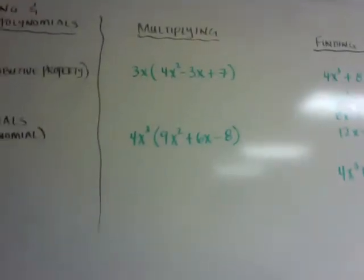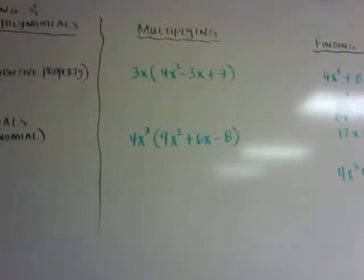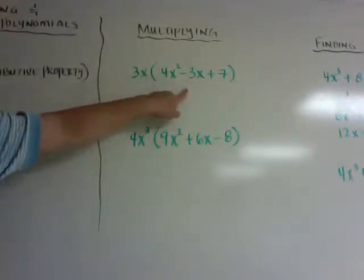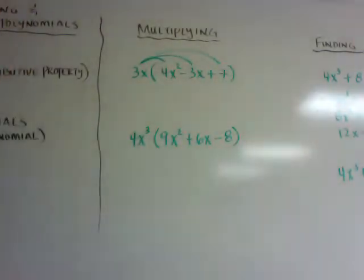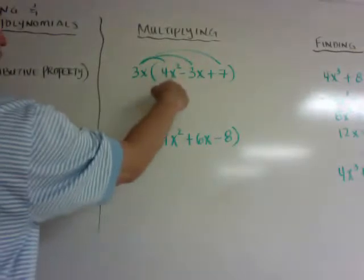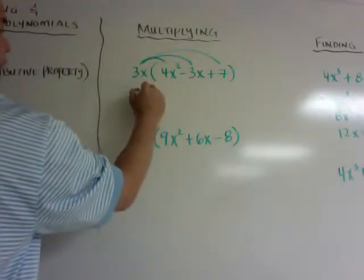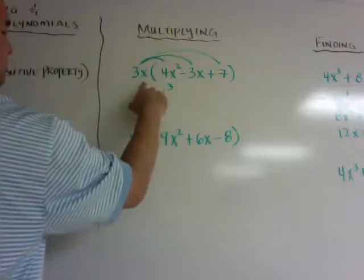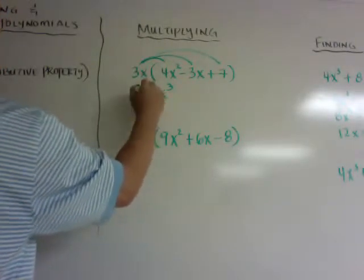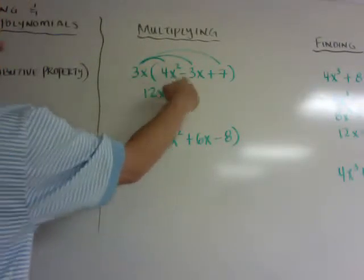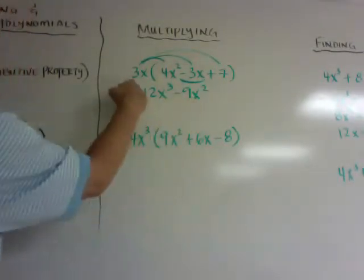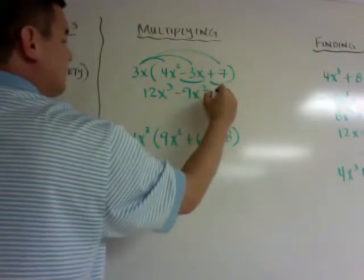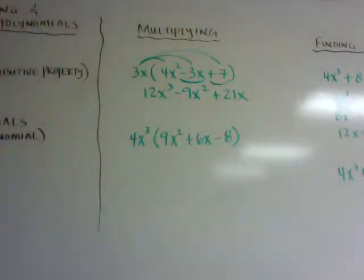So the first one, multiplying, you can see I have a monomial times a trinomial. So all you do is distribute these in. 3x times 4x² is going to be 12x³, 3x times negative 3x is going to be minus 9x², and then 3x times positive 7 is plus 21x. So pretty simple in doing that.